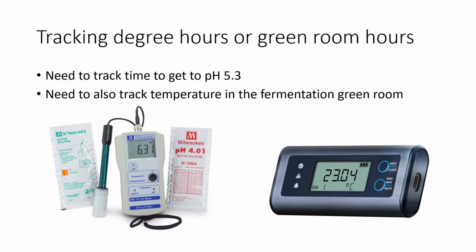To track this, you need a pH meter to determine when the product reaches pH 5.3. In some meat processing facilities, there may be an integrated pH meter within a programmable logic controller (PLC), but more often small operators will have a handheld pH meter. These are becoming quite affordable — decent meters in the $100 range that are easily calibrated and offer two decimal-point accuracy.